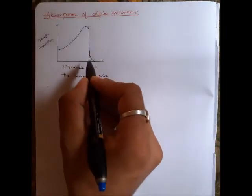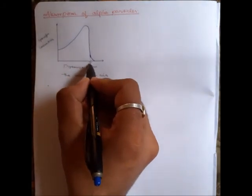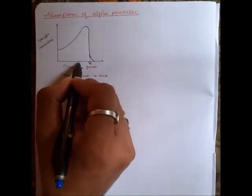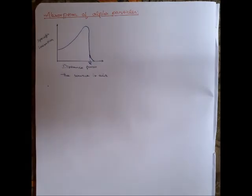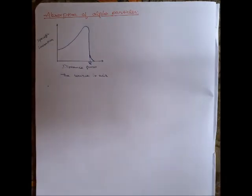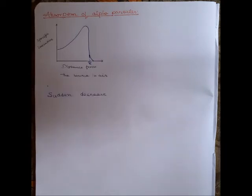This extrapolated part is called the range of the alpha particle. This means the thickness of material needed to stop the alpha particles from penetrating through.